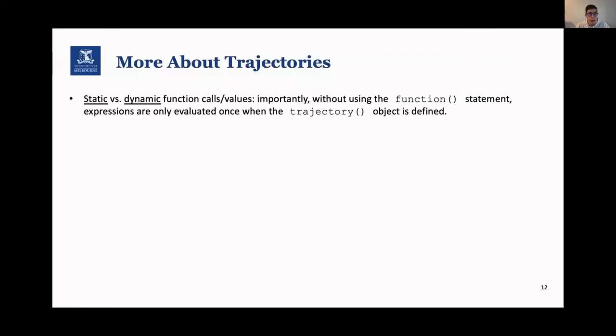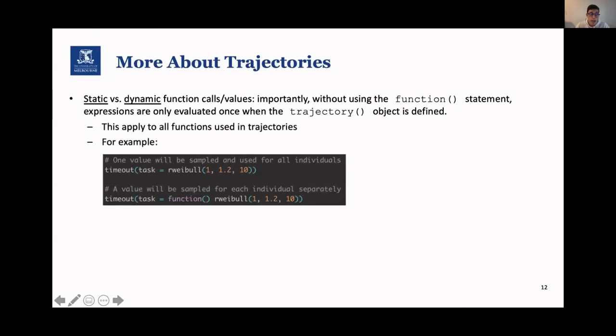One very important thing with trajectories is the difference between static and dynamic function calls. If you do anything in a trajectory without the function statement, the expression is only evaluated one time when the trajectory is defined. So let me illustrate that. If you have a timeout with a random draw from a Weibull distribution and you do not specify function, one draw is performed when you define the trajectory. So every individual will have that same value, whereas if you use the function statement here, you sort of tell Simmer that, oh, this is the function you have to evaluate every time. So in the bottom case, for every individual, a different value will be sampled. That's an important thing to know.